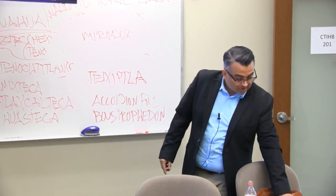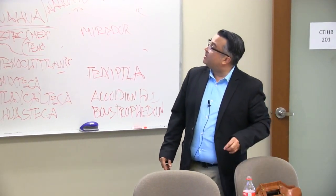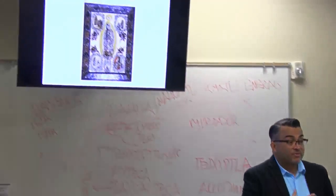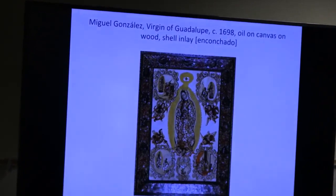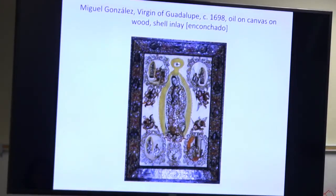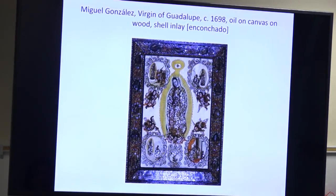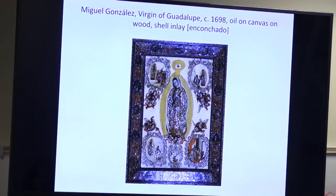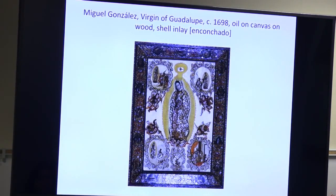Enconchado — the term I already introduced, which means shell inlay. This image is by Miguel Gonzalez, a member of the Gonzalez family we're talking about. The Virgin of Guadalupe, from around 1698, oil on canvas on wood with shell inlay. Here you can see how the artist carefully uses the shell to enhance the reflective quality of the shell.